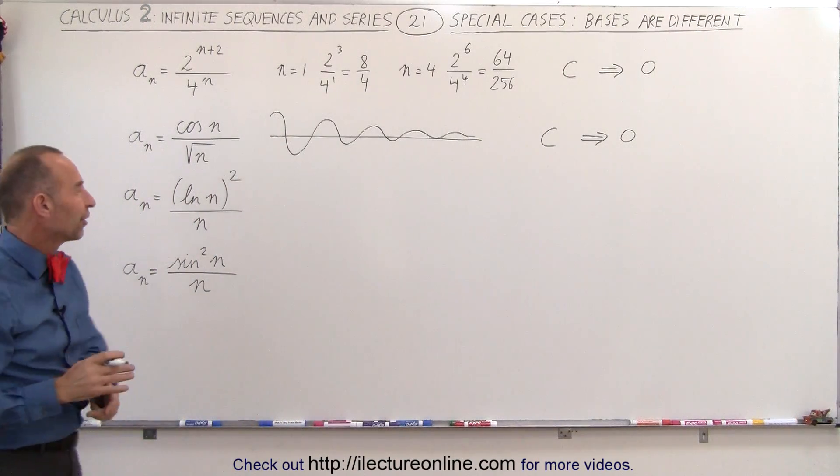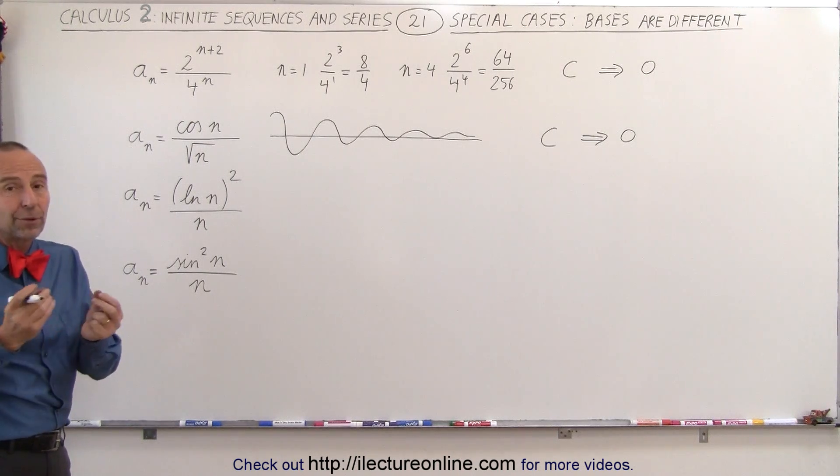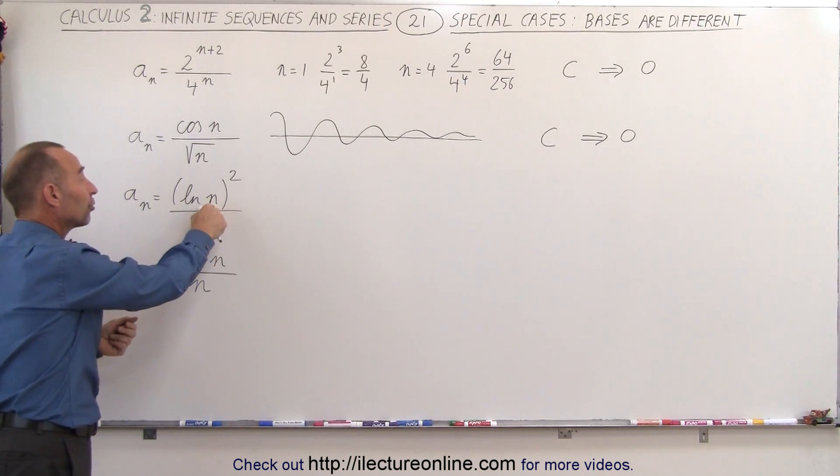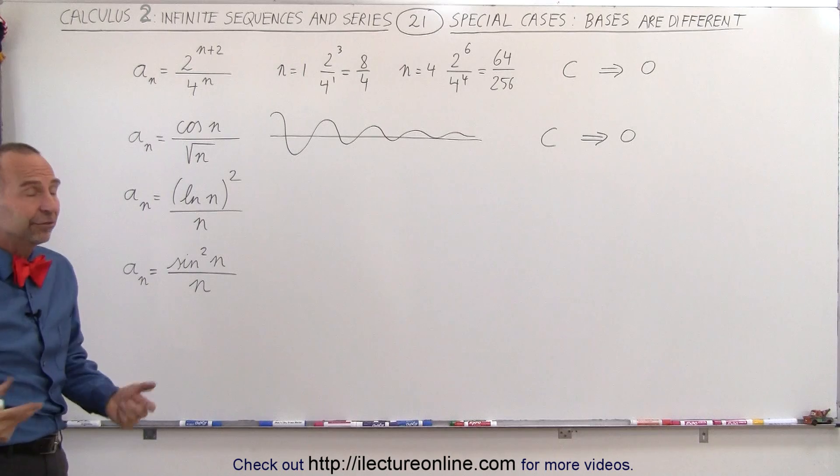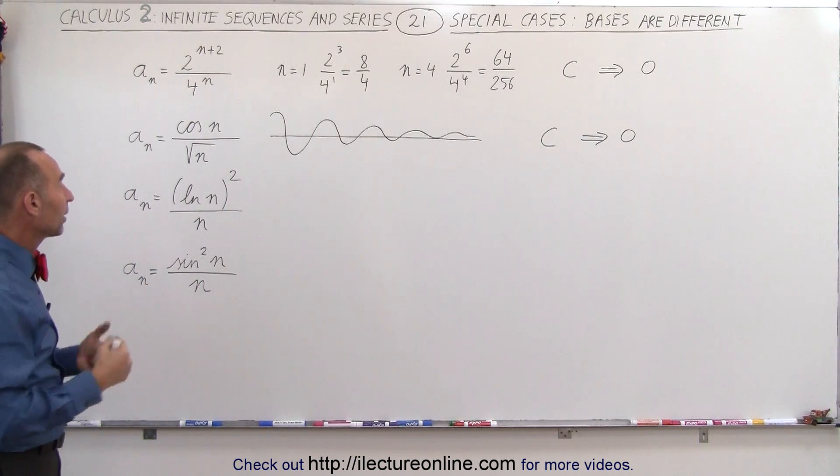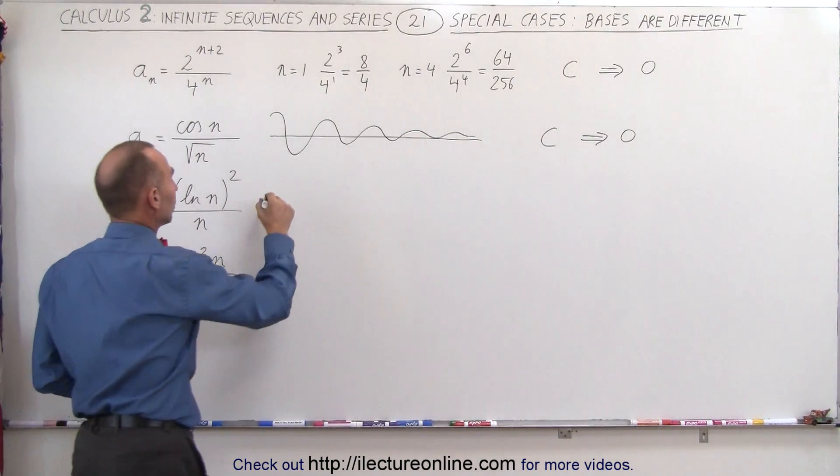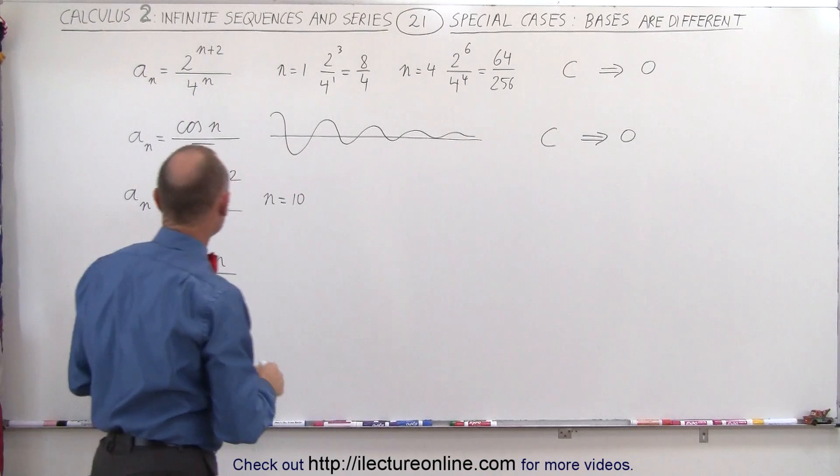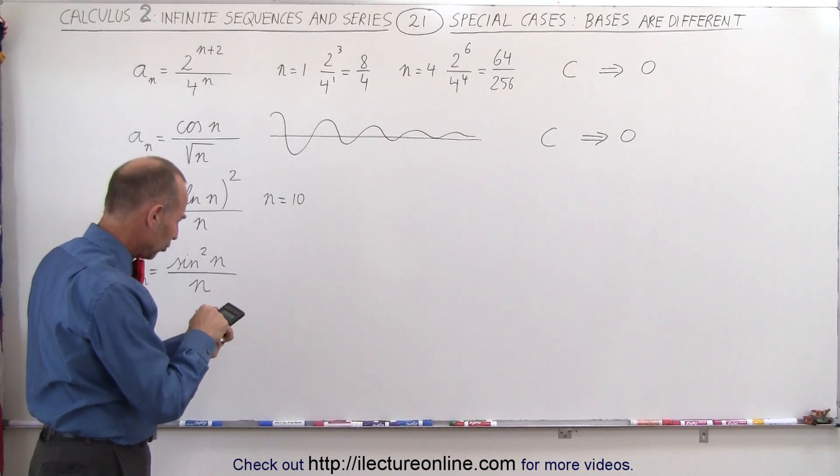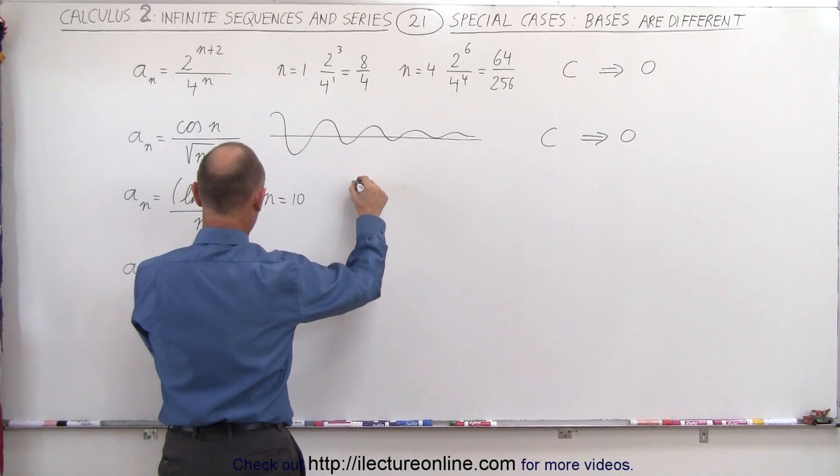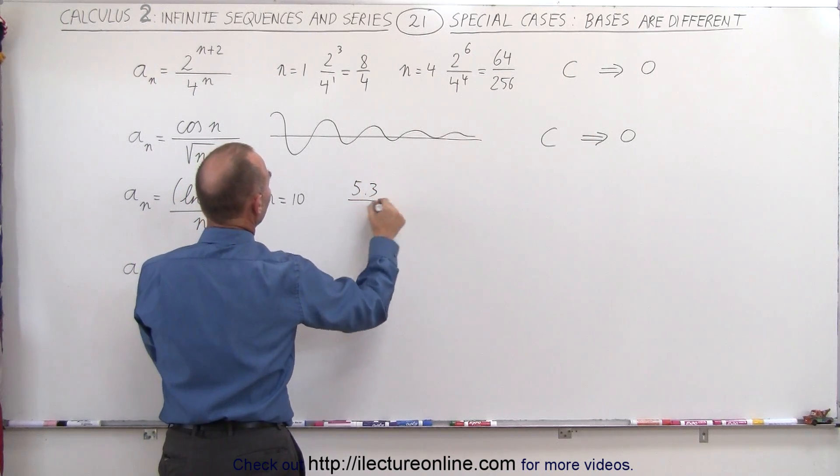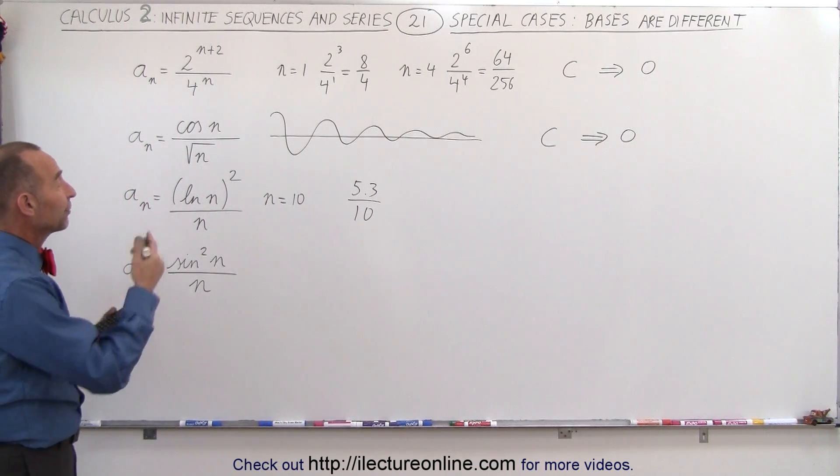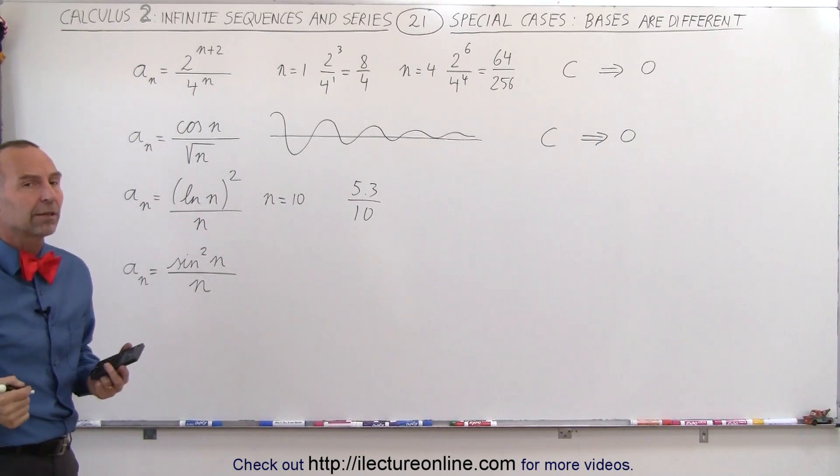On the third example, it becomes very confusing. We know that the natural log of a number is not very large, but if we keep squaring a number that gets larger and larger, will that be larger than the value of n itself? We can do some trial and error. Let's call n equals 10. I will need a calculator. We take the natural log of 10, and then we square that number, so the numerator becomes 5.3, and the denominator is 10. Even at a relatively small value for n, the numerator is already smaller than the denominator.